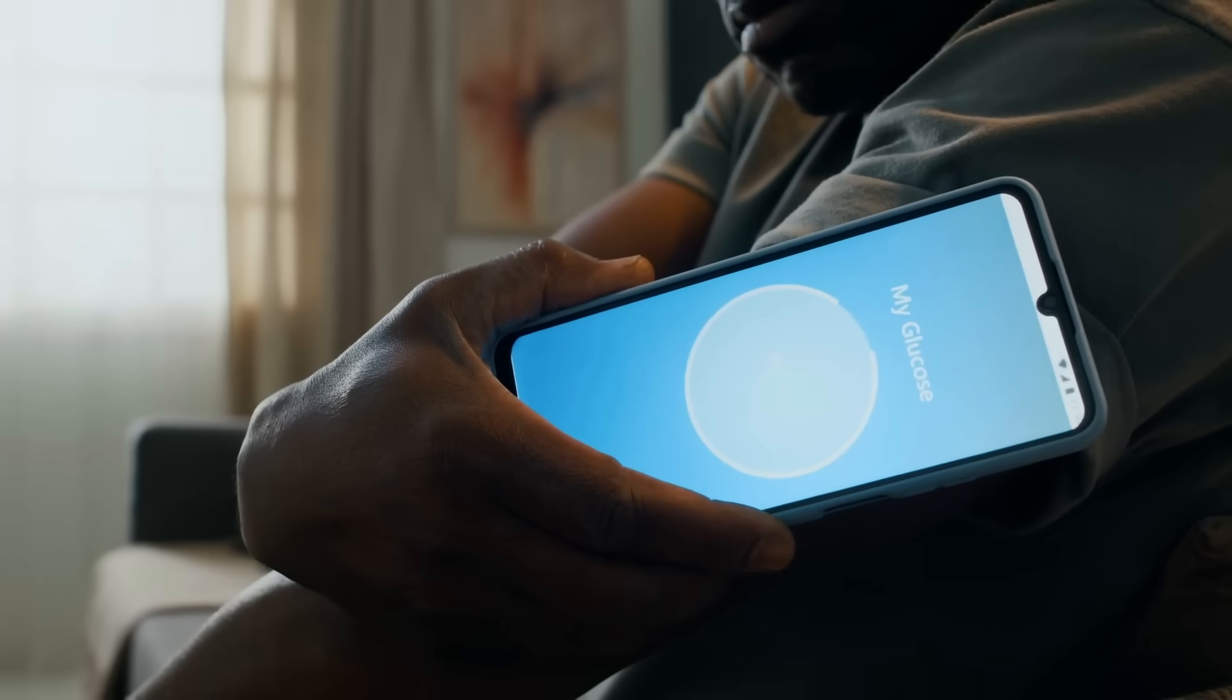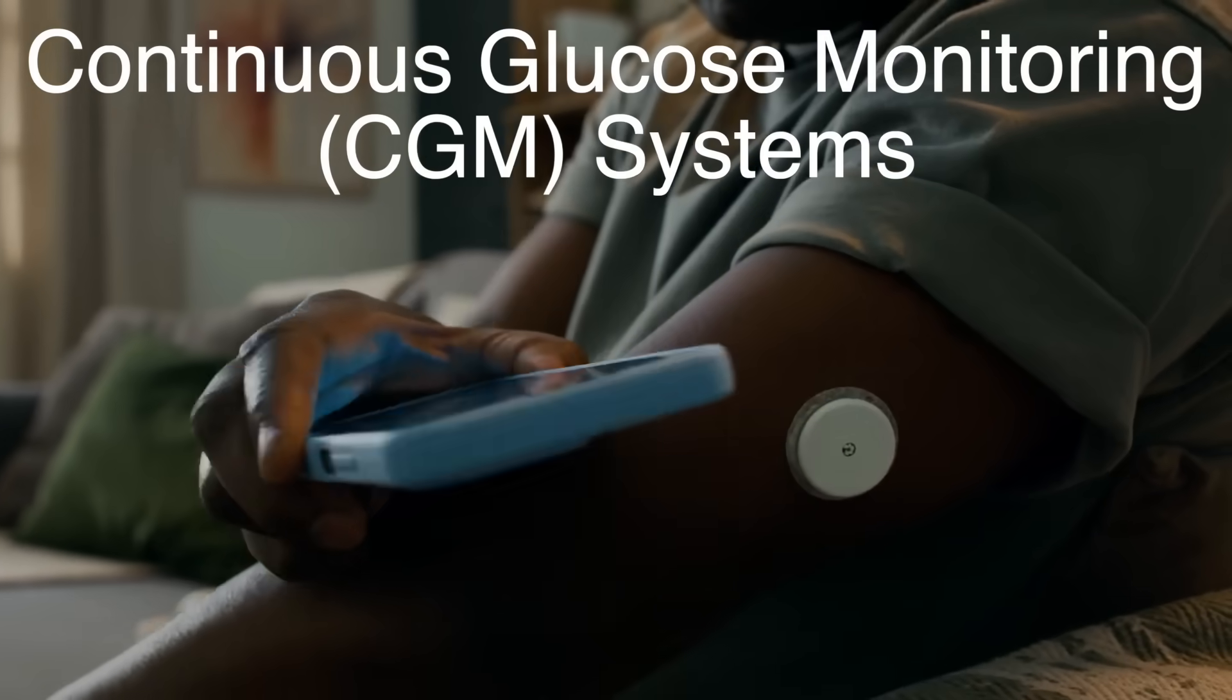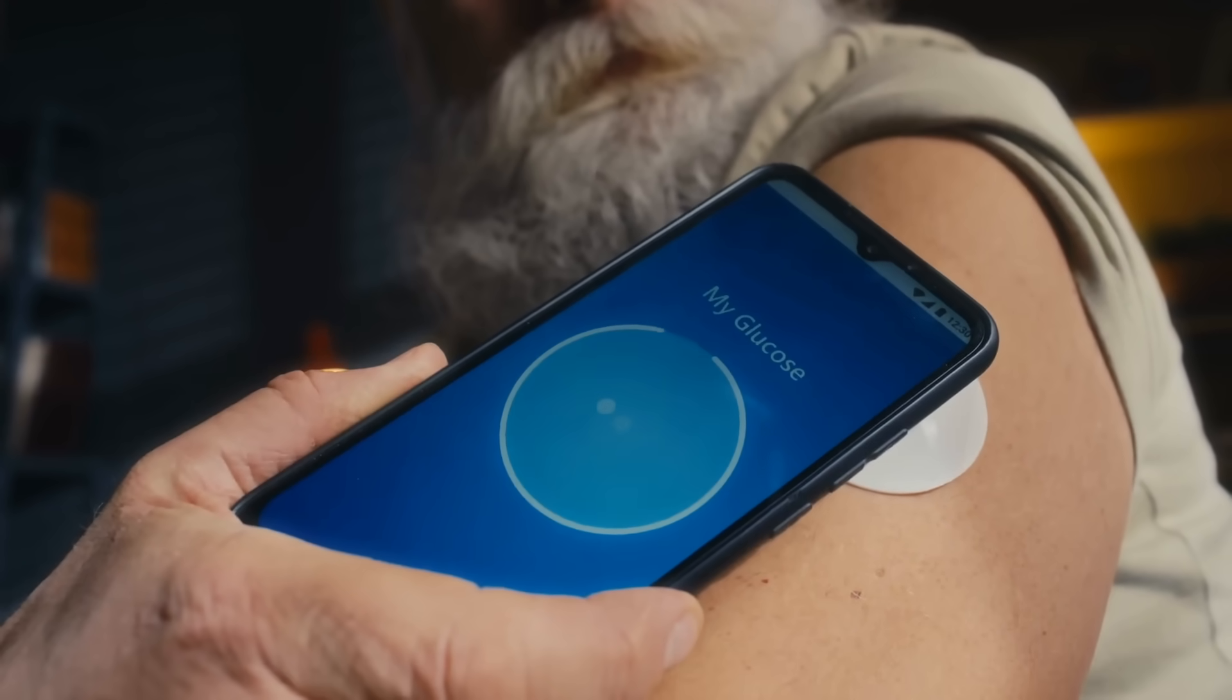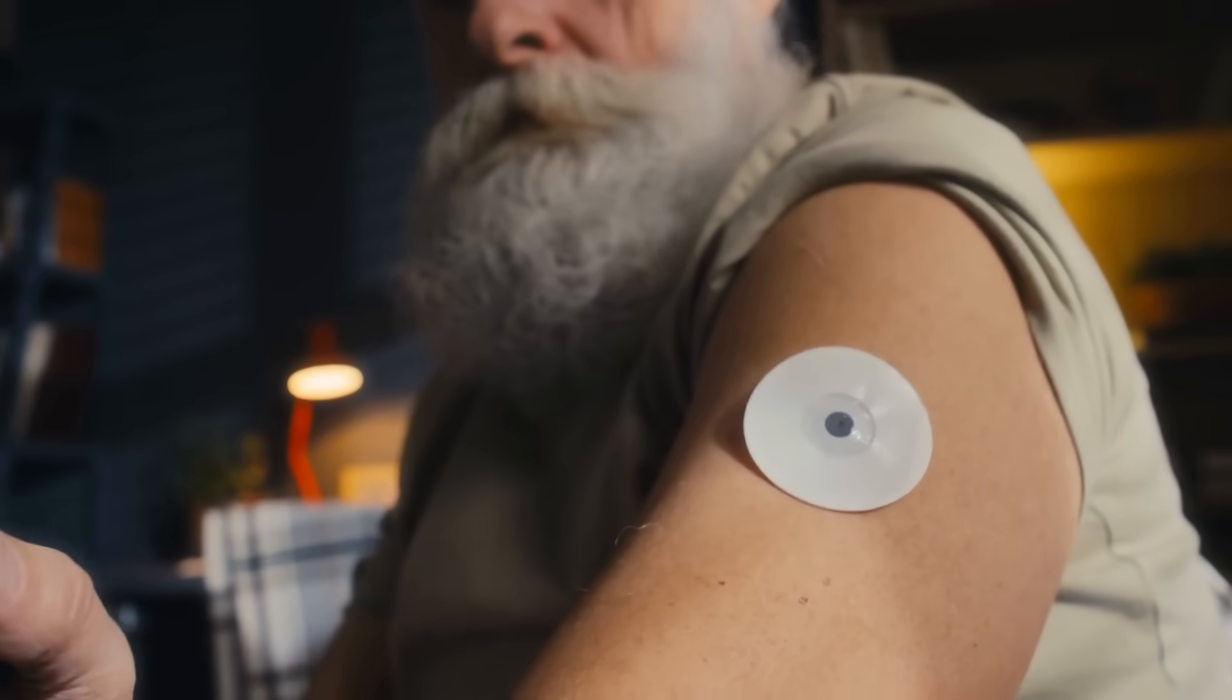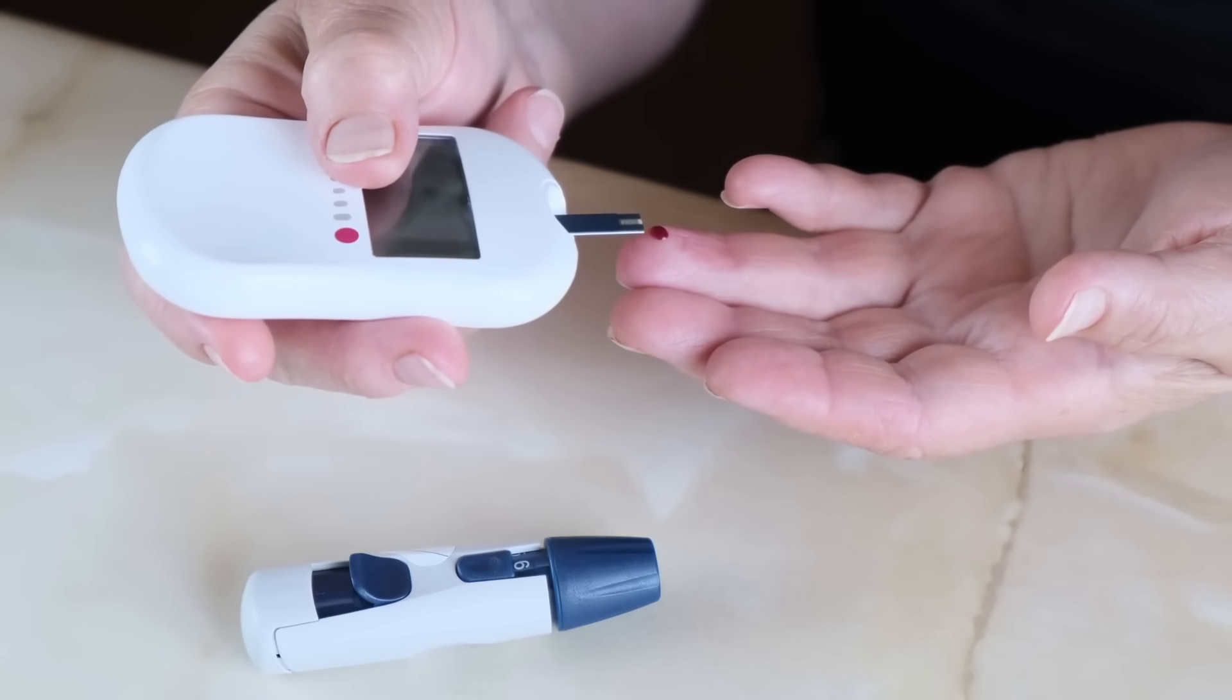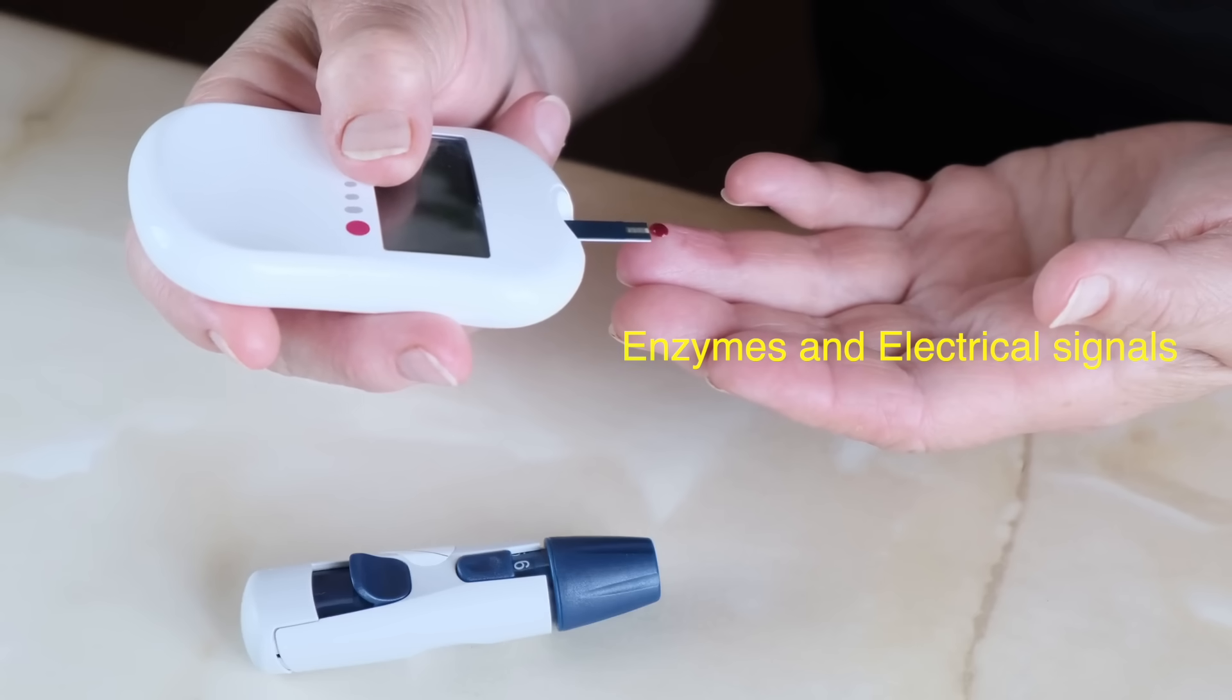We're also seeing the rise of continuous glucose monitoring, or CGM systems, which don't require finger pricks at all. These devices use a small sensor inserted under the skin to measure glucose levels in real time, sending data to a smartphone or receiver. While they're not the same as traditional glucose meters, they share similar principles, relying on enzymes and electrical signals to measure glucose.